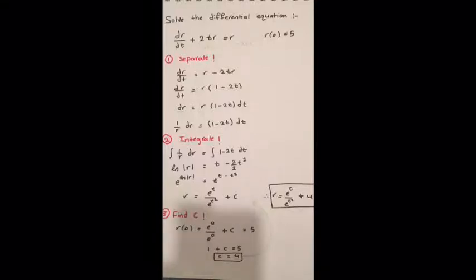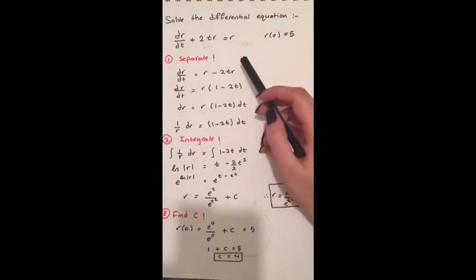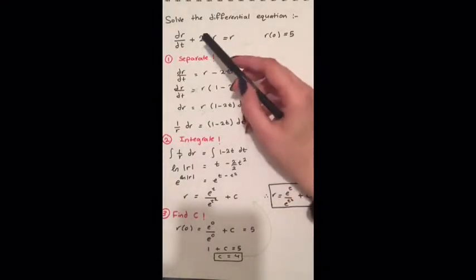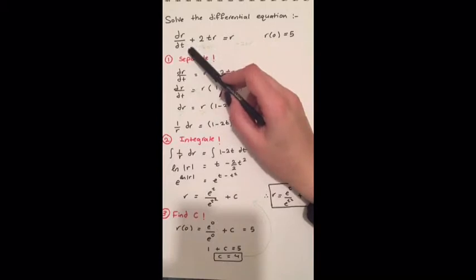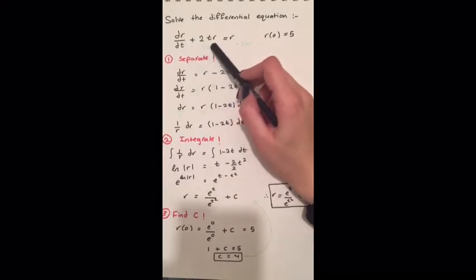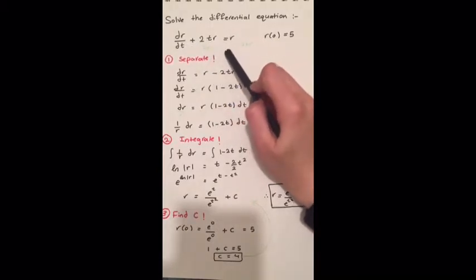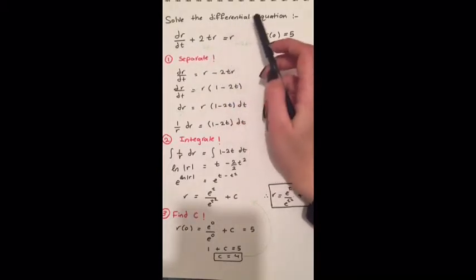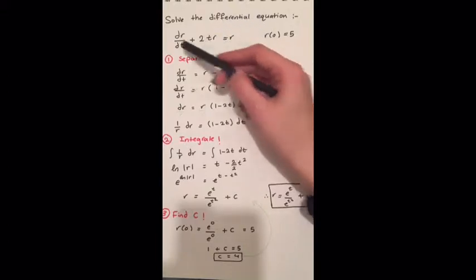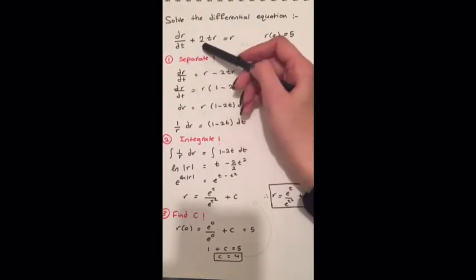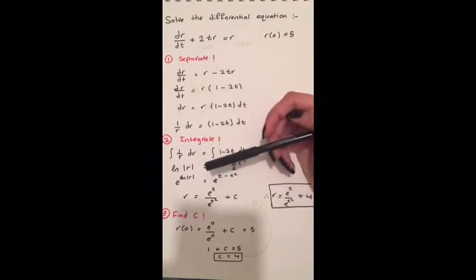Hi guys, today I'll be showing you how to solve a differential equation. The problem that we have is dr/dt plus 2tr equals 2r. When I say differential equation, it means that we have the dr/dt in our problem.